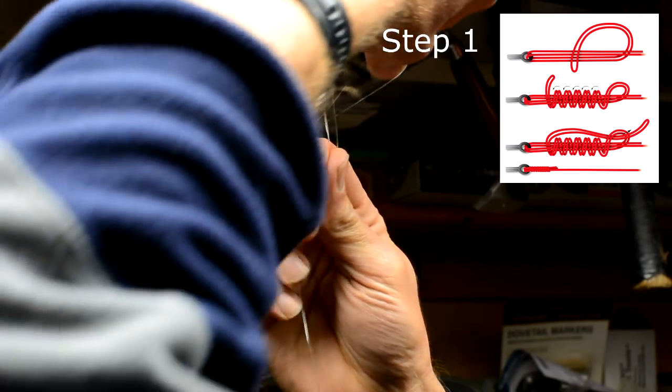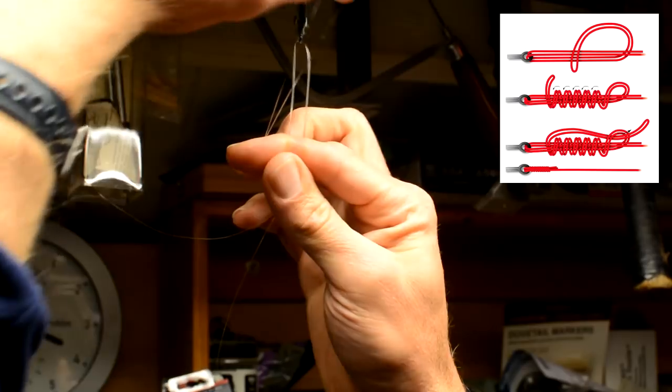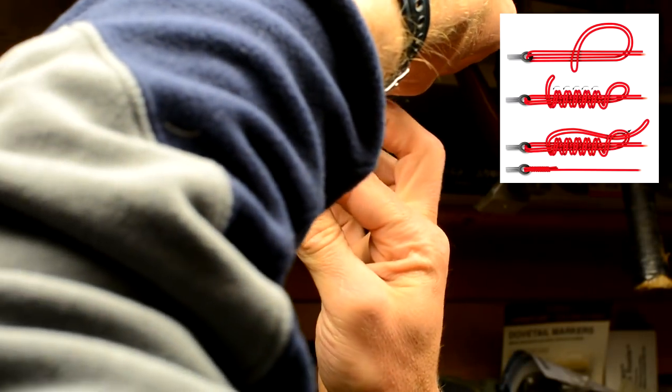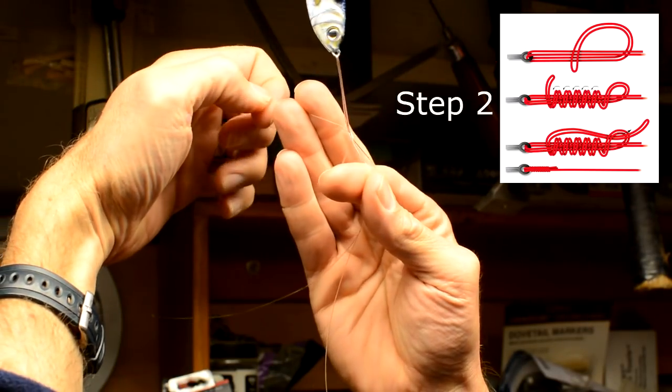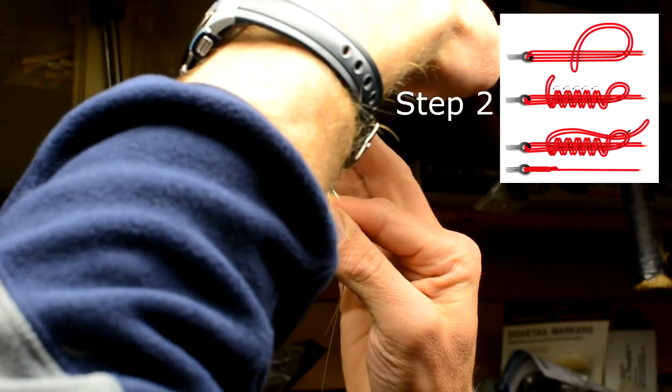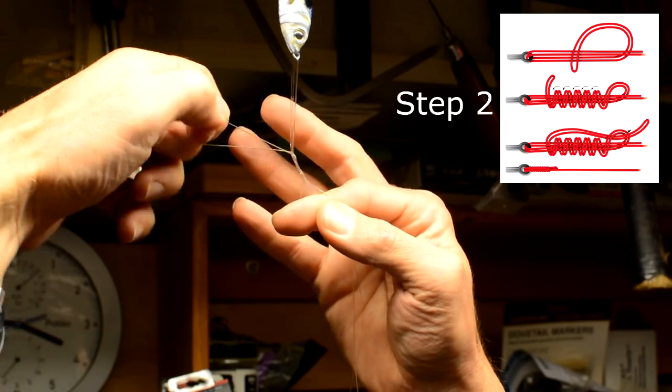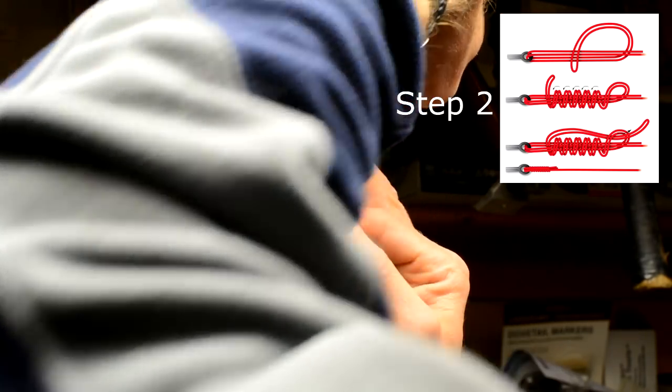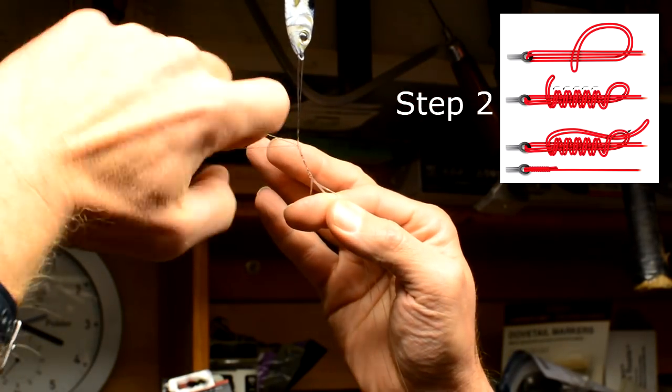And then get into step 2 which is wrap the working end of the line 5 times. And while doing that, try to keep it from twisting. As you can see, I twist my finger around if I get a twist in the line.